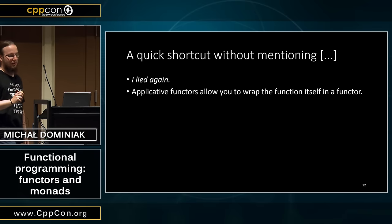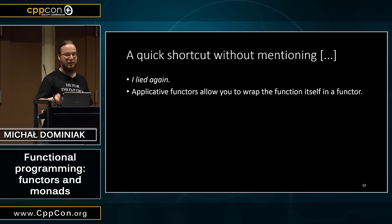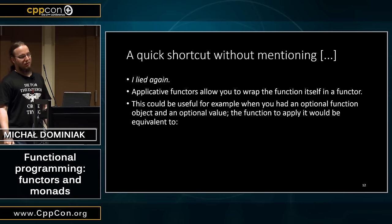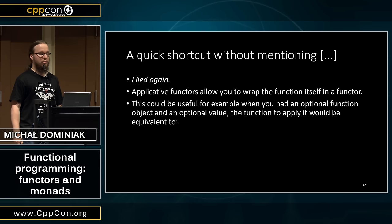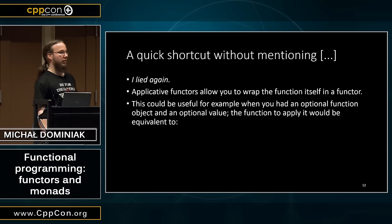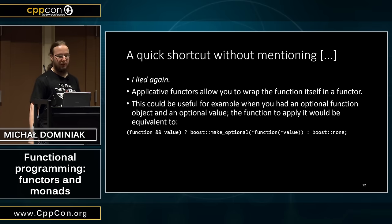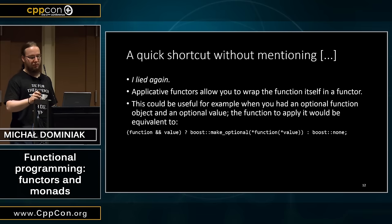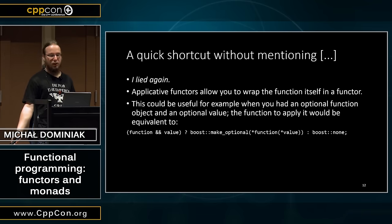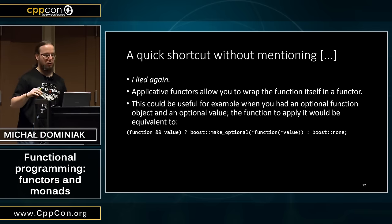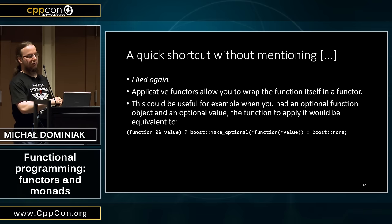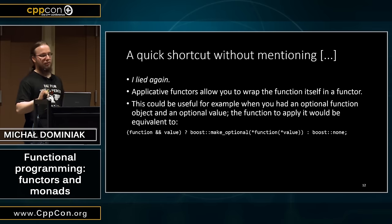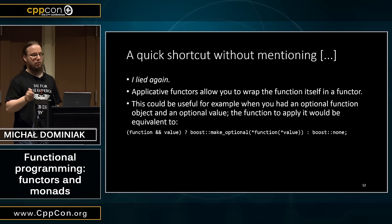I'm going to mention Applicative, just for completeness. It's a functor where the function itself can be a functor, so you can have an optional function and an optional value and just call it. It can be useful at times, but it's not really important for the later part of the talk. Recently in Haskell there was a proposal to make all monads automatically be applicative functors, and I think that was accepted.